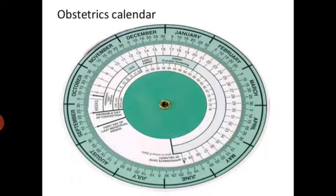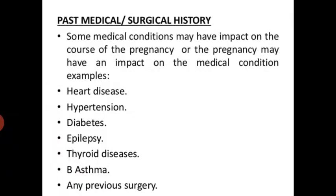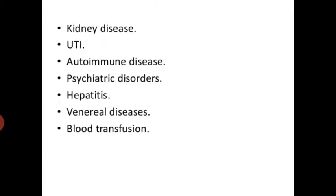An obstetrical calendar is used for diagnosis of expected date of delivery. Past medical and surgical history: some medical conditions may have impacted the course of pregnancy, or pregnancy may have impacted the medical condition, such as heart disease, hypertension, diabetes, epilepsy, thyroid disease, asthma, any previous surgery, kidney disease, UTI, autoimmune disease, psychiatric disease, hepatitis, liver disease, and blood transfusion.